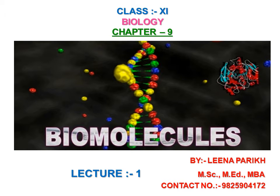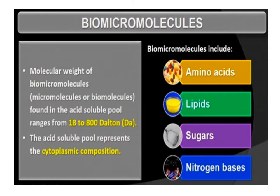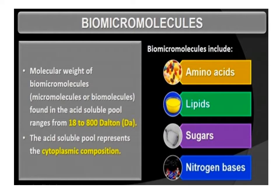Biology Chapter 9: Biomolecules of Class 11. The molecular weight of biomicromolecules — micromolecules or biomolecules found in the acid-soluble pool — ranges from 18 to 800 Dalton. The acid-soluble pool represents the cytoplasmic compositions. Biomicromolecules include amino acids, lipids, sugars, and nitrogen bases.